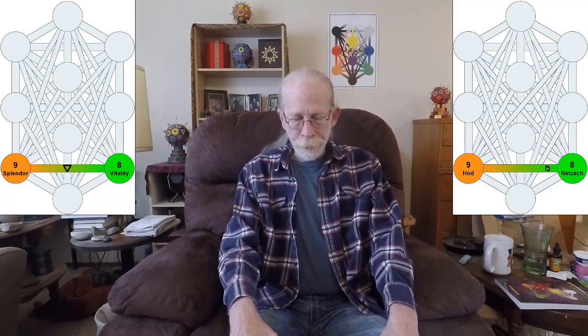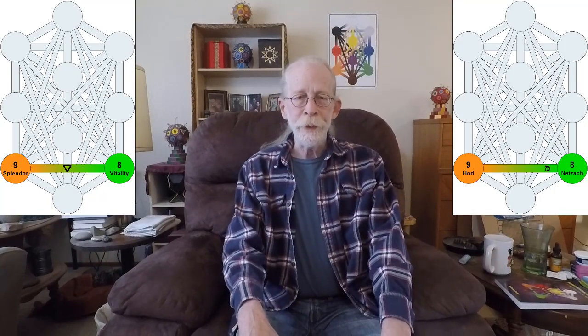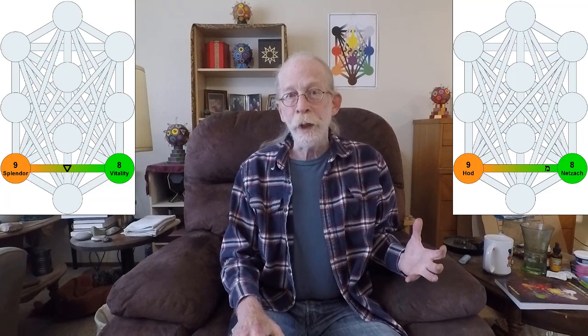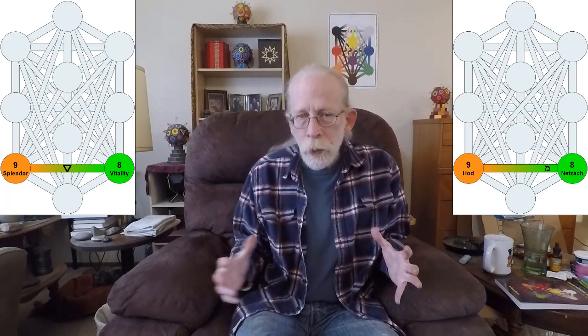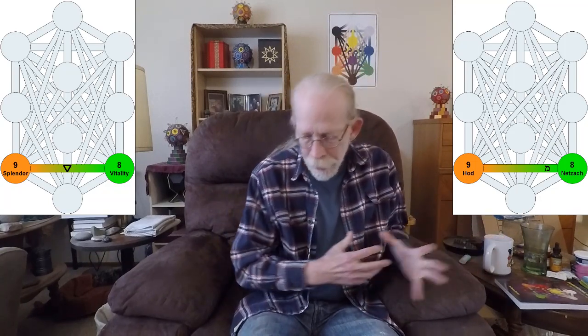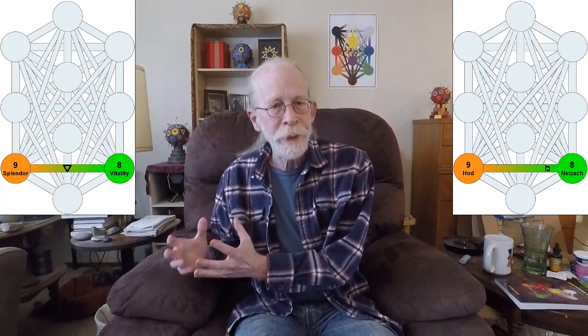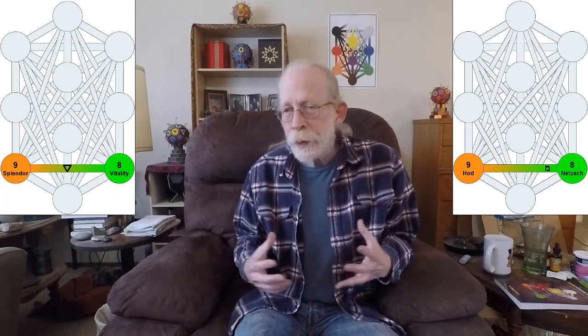So the first gate is the linear gate of Mem. We start in Netzach and move along Mem to Hod, and then back again. And from this, we learn what it means to open, to resonate, and to close, to dissonate, to protect the self-identity, versus opening the self-identity to include other. This is the critical part of the astral body, the completion of the astral body.